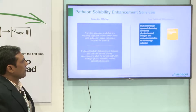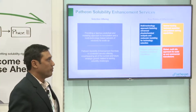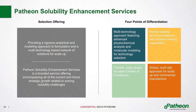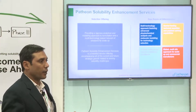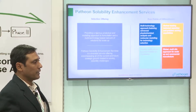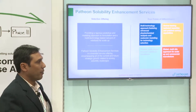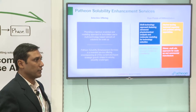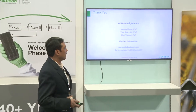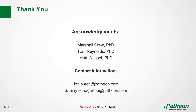To wrap up by tying this to the talk yesterday: this is a differentiator for Patheon. The Quadrant 2 approach provides a rigorous analytical and modeling approach for formulation. In this talk I went over how we do scale-up of both the spray dried intermediate and the drug product, balancing performance, manufacturability, and stability to achieve a robust drug product for Phase 2. I thank Marshall Crew, Tom Reynolds, and Matt Vessel, who are all part of this program.